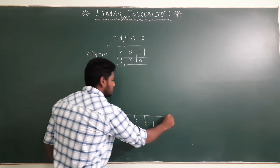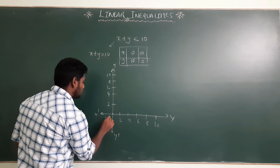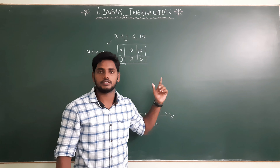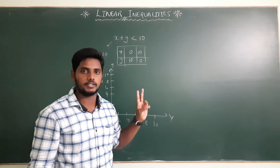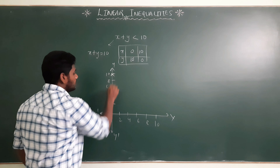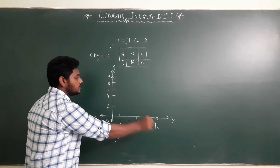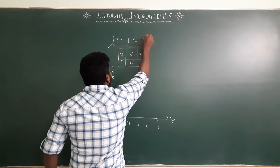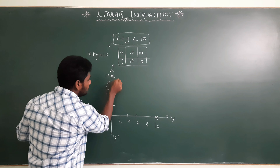This is x-dash and this is x; this is y-dash and this is y; the origin is (0, 0). Scale: on the x-axis, 1 centimeter equals 2 units; on the y-axis also 1 centimeter equals 2 units. Now to draw the graph: plot the point (0, 10) and the point (10, 0). Since this is a strict inequality, we join those two points with a dotted line.